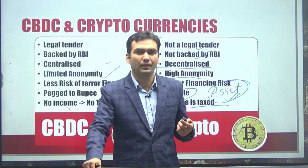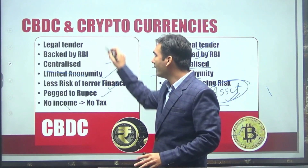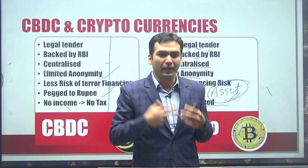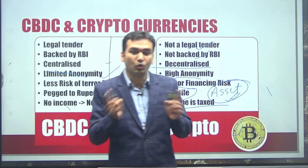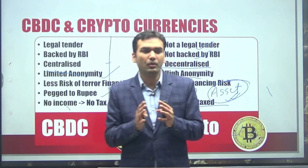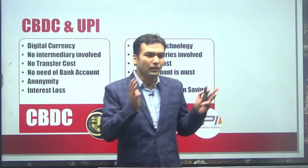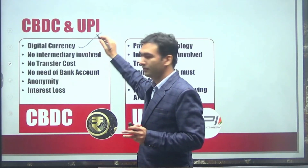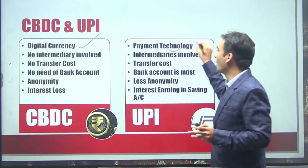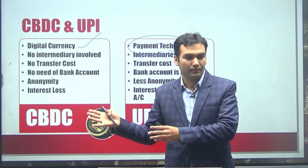We already have a popular mode of payment — UPI — which is also on mobile phone. So how is CBDC different from UPI? The basic difference is that CBDC is a currency and a legal tender. UPI is not a currency — UPI is just a technology to transfer your money, not money itself.